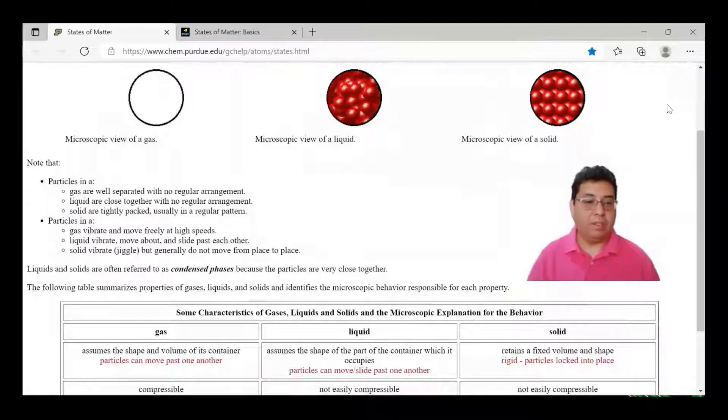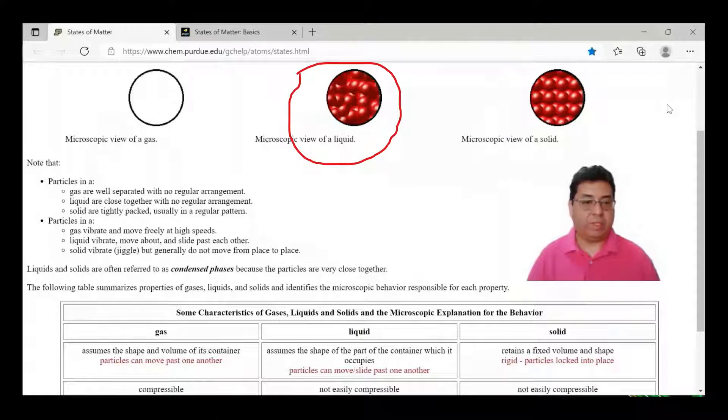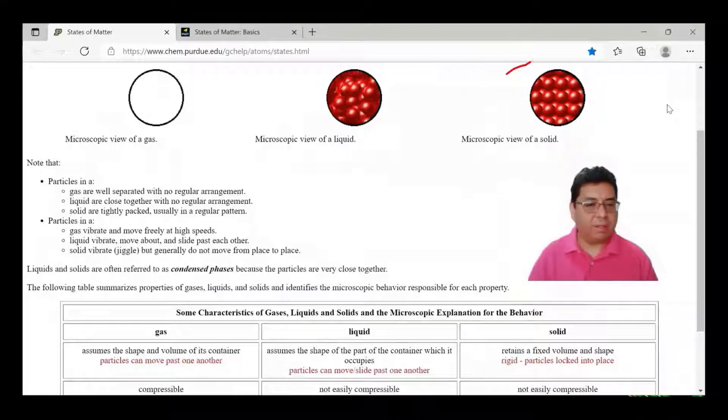It also gives you information about how for a gas, it vibrates, moves freely at high speeds. I think in the circular object it's so freely moving at high speeds it's just very random. The liquid one also shows that it vibrates, moves about, and they slide past each other. For the solid it vibrates or it says jiggle, which I'm not sure if it's showing it moving at all a little bit, but it is there. And it generally does not move from place to place.